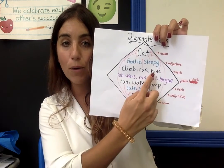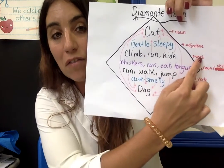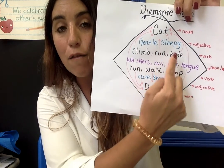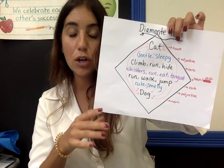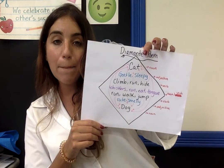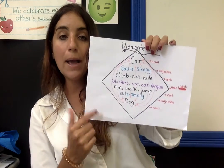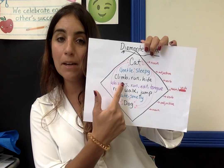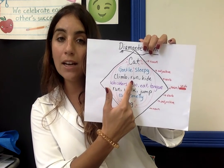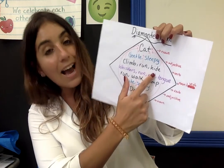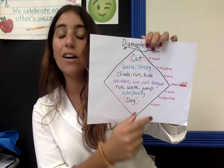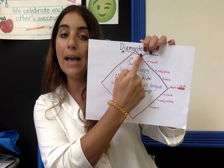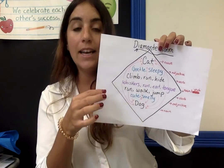And number three, right here, we have verbs — three verbs describing cat. So we put climb — escalar — run — correr — and hide — esconder. We put these three verbs to describe cat.